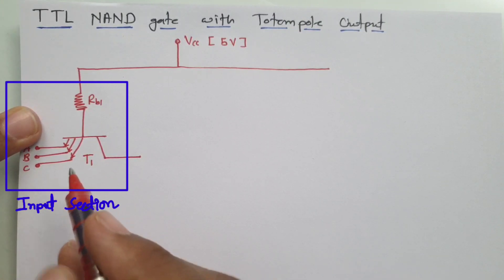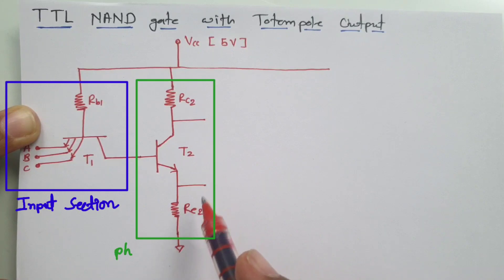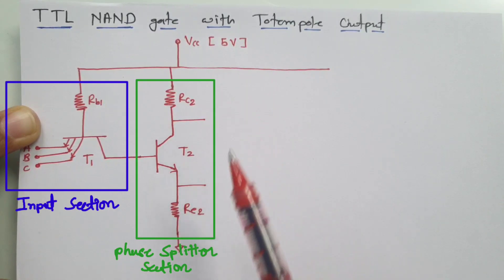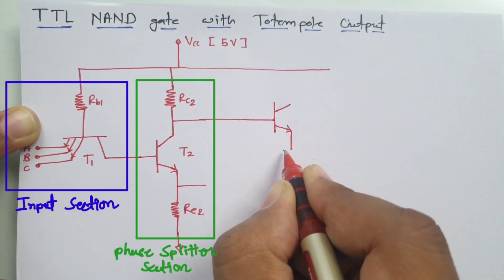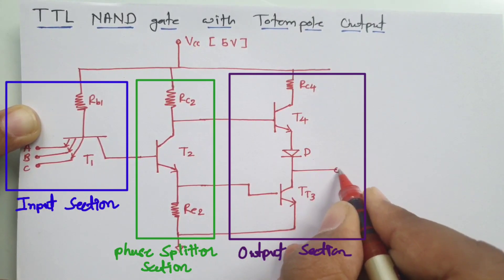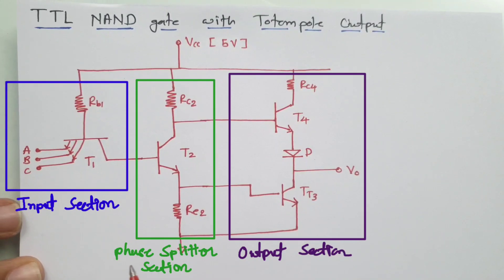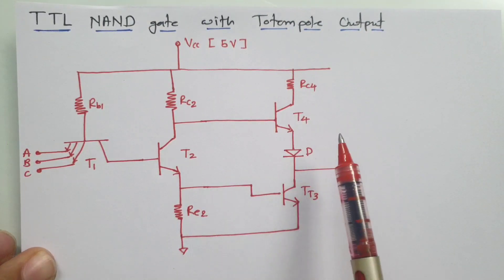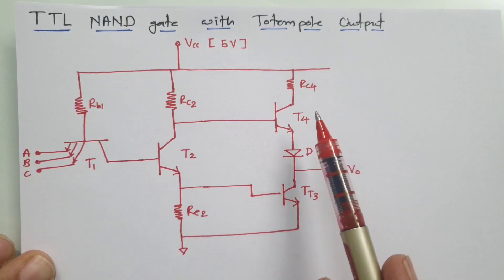The second section is the phase splitter section. In the phase splitter section, we have transistor T2 and biasing resistances RC2 and RA2. The third section is the output section, from which we take output V0. In the totem pole output, we have a transistor-diode-transistor connection, and this connection is referred to as the totem pole connection.